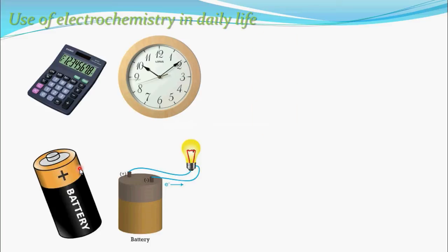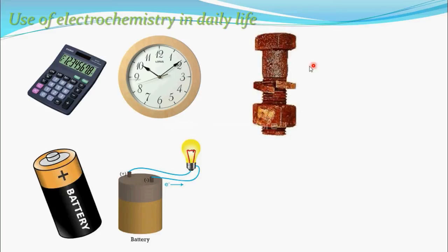See, it also chemistry. See, rusting of iron. You have seen this rusting of iron. See, study of electrochemistry tells us what reactions cause this rusting of iron and how we can prevent this rusting of iron. See, by painting, by painting on it, we can prevent those things.